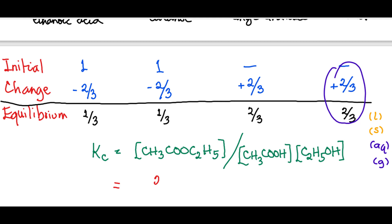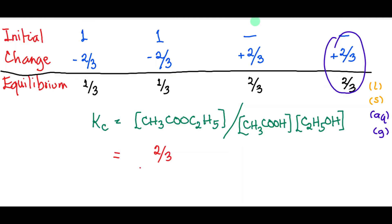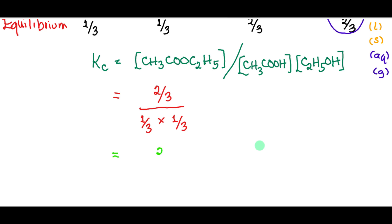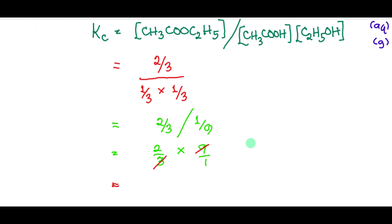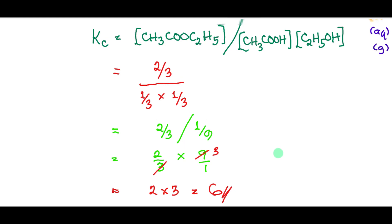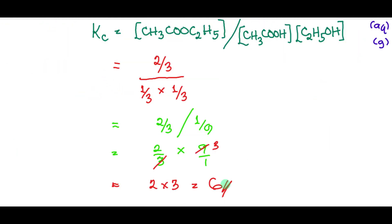Substituting the values: Kc = (2/3) ÷ (1/3 × 1/3) = (2/3) ÷ (1/9) = (2/3) × (9/1) = 2 × 3 = 6. So the equilibrium constant for this reaction is 6.